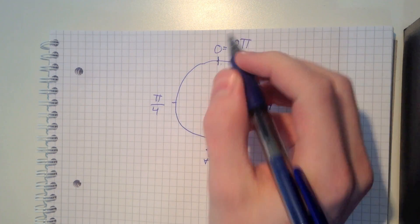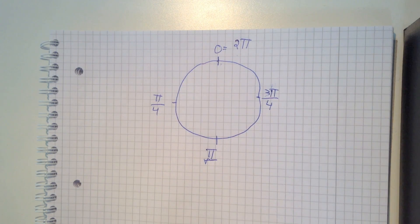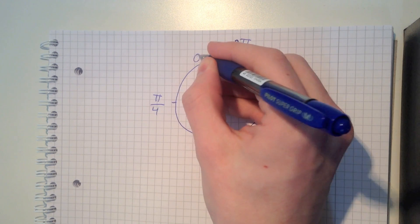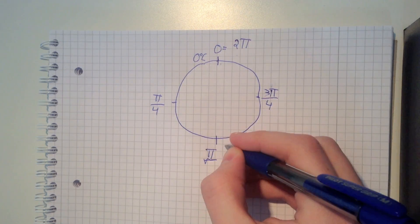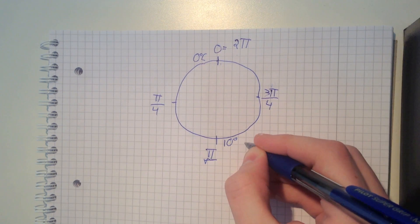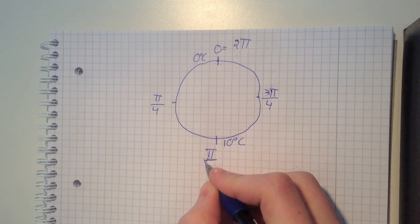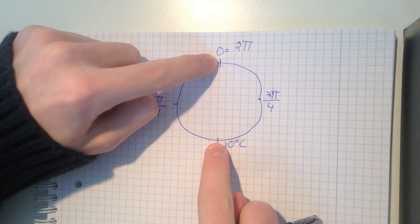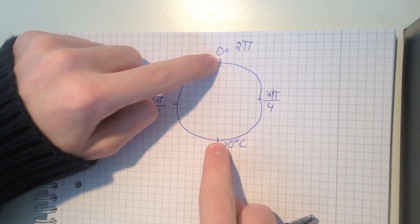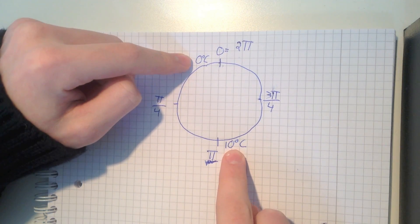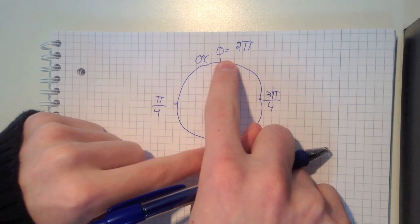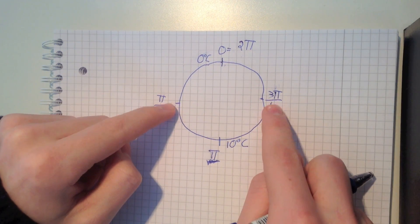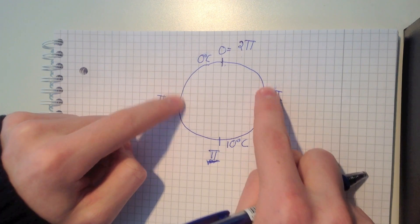So if you just take some random temperatures — say it's 0 degrees Celsius at one position and 10 degrees Celsius at another — what you see is that these two positions on the exact opposite sides of the Earth do not have the same temperature. But somewhere along the way, between these two positions, the temperature has to be the exact same on the exact opposite sides of the Earth.